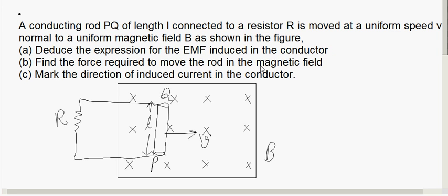The force required must be equal to the magnetic force acting on conductor PQ in the opposite direction. When a conductor is placed in a magnetic field, there exists a force on it, and the external force required must balance this magnetic force.